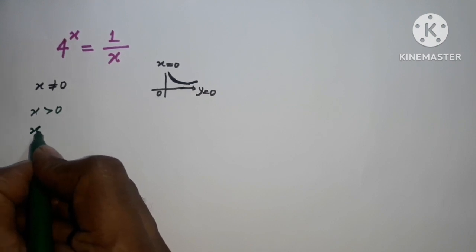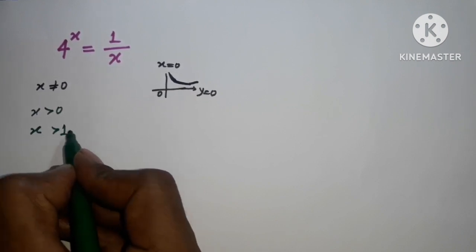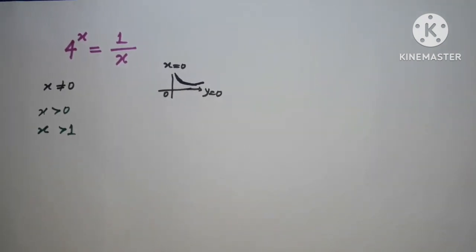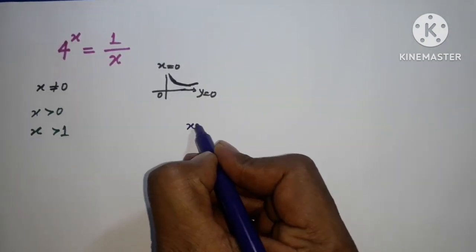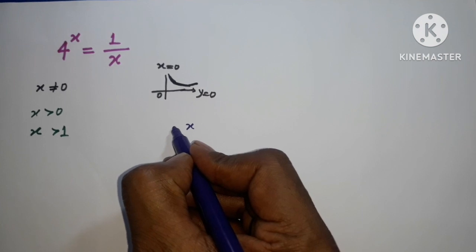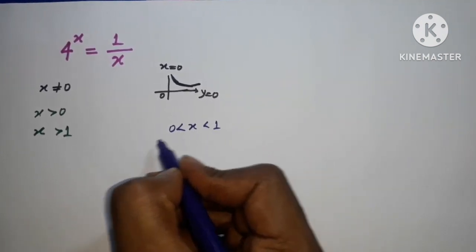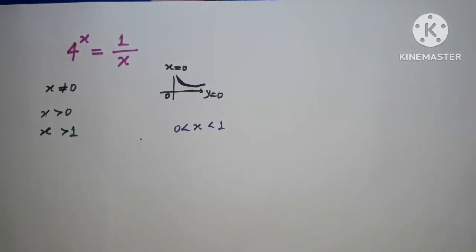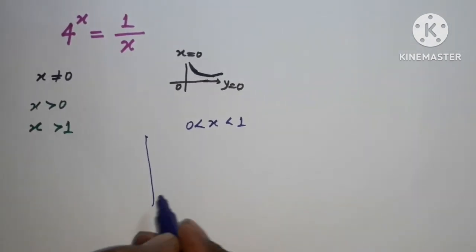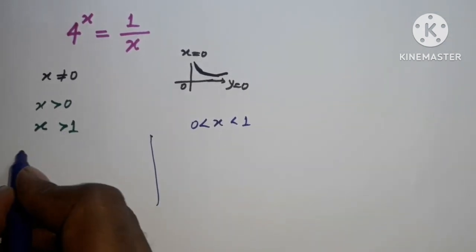I am taking two cases. The first case is x is greater than or equal to one, and the second case is x lies between zero and one. So we can proceed — if x is greater than one, I will check using a table of LHS and RHS terms.